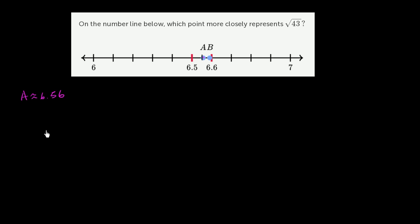So let's square that and see what we get. So 6.56 times 6.56. And obviously, if you had a calculator, you could just punch the square root of 43 in. But we don't want to do that. Or this exercise doesn't want us to do that. So I'm not going to use a calculator for it.